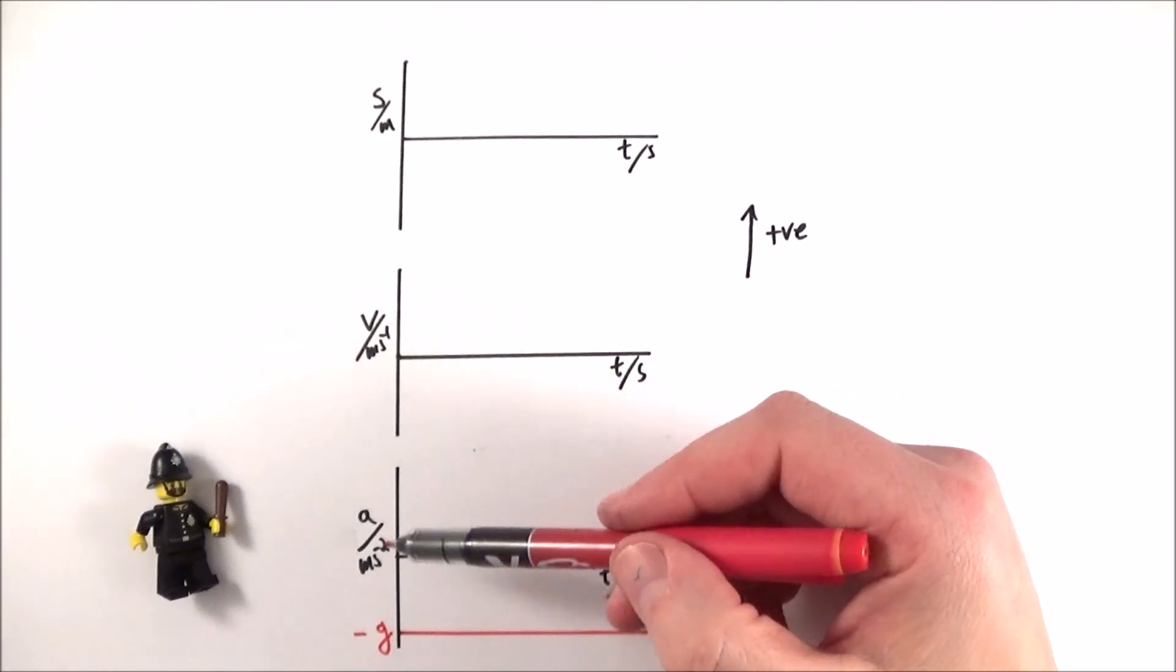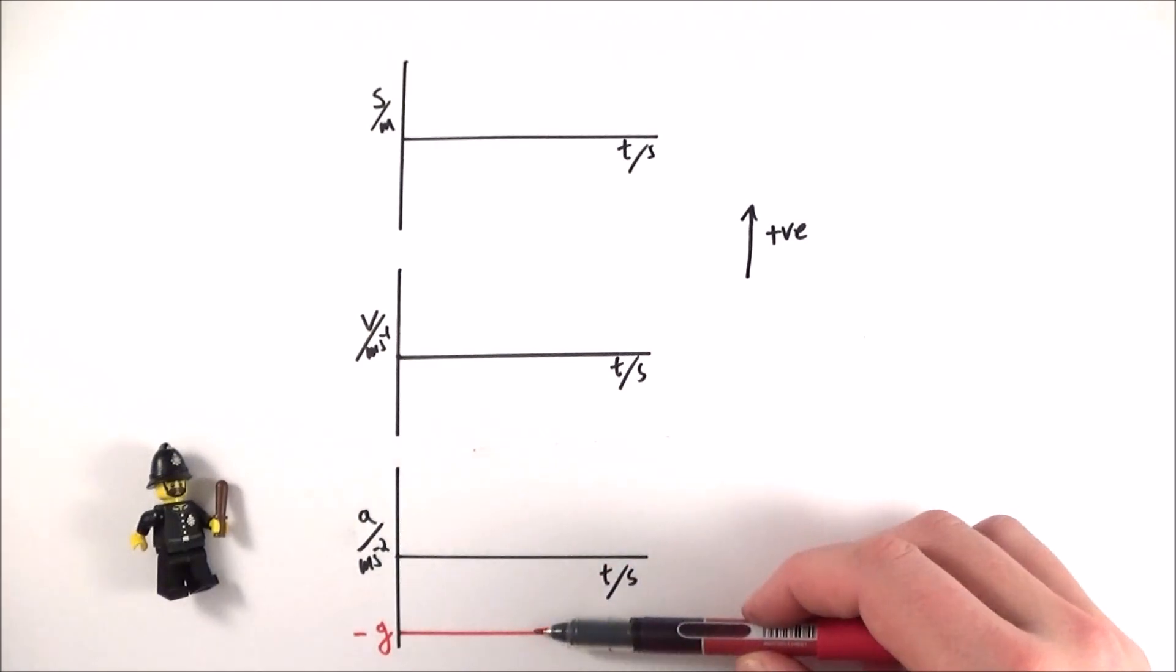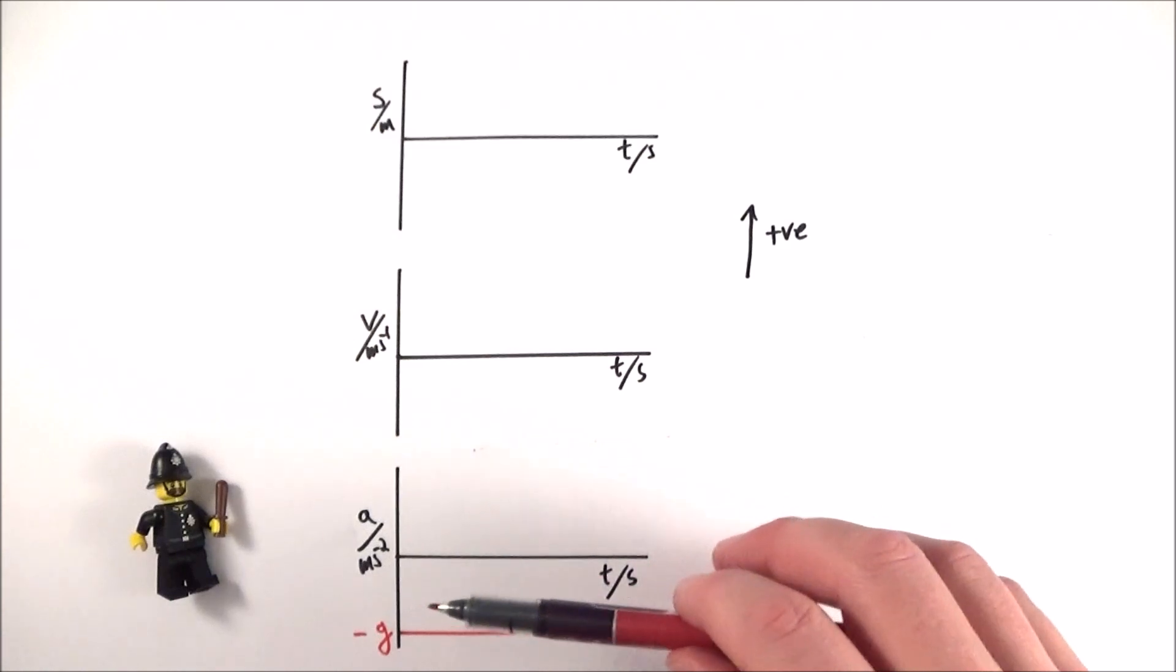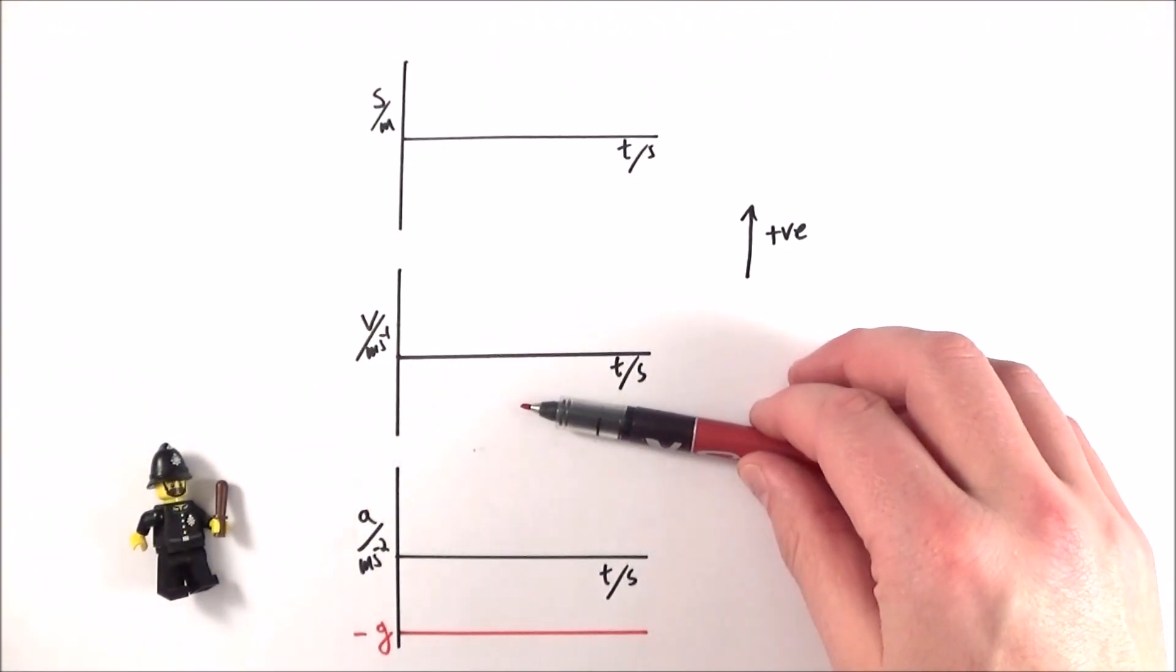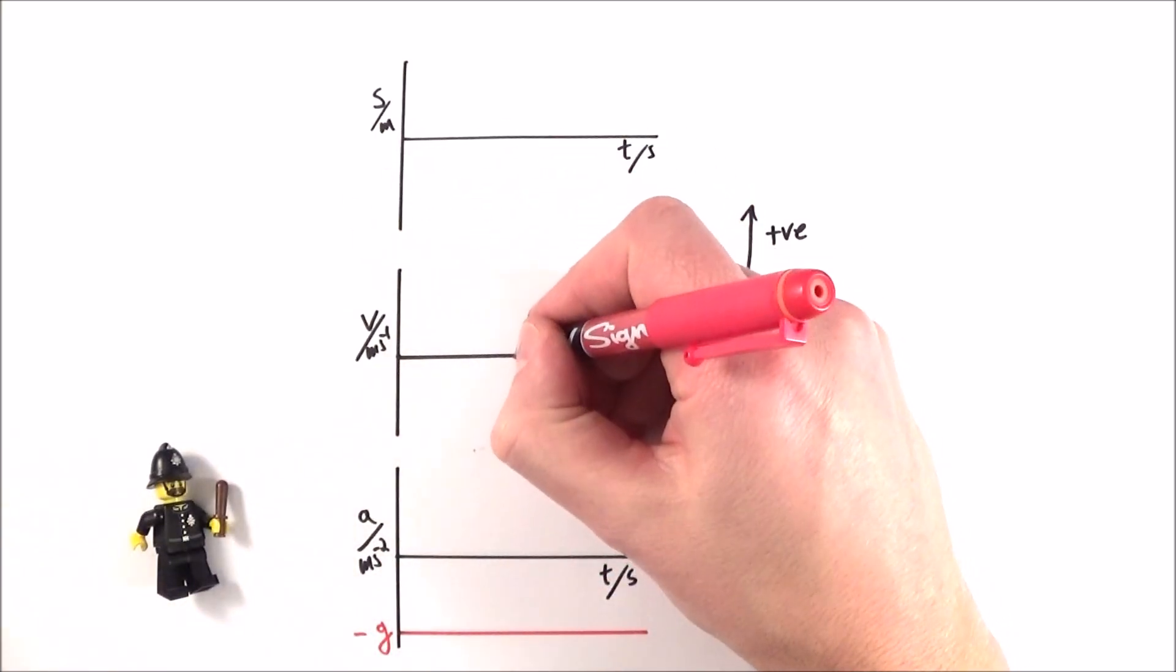Now this graph here is a tricky one, it's the acceleration time graph, something that you don't need to know. But what effectively it means is that the acceleration on that object is always downwards. Now because acceleration is the rate of change of velocity, this also must mean that the velocity at some point must be zero.